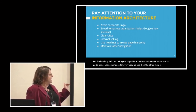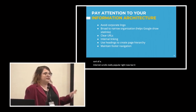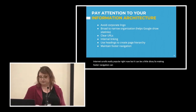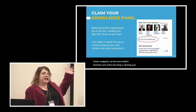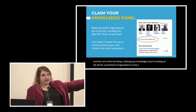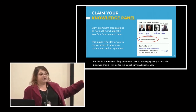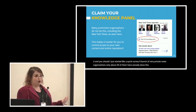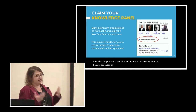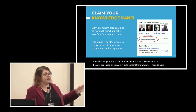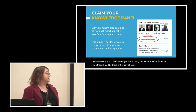Infinite scroll is popular right now but can be dicey — maintaining footer navigation is more helpful. Finally, claim your knowledge panel. If your organization is prominent enough to have one, you should claim it. A quick survey of prominent news organizations found only about 50% have done this. If you don't, the AI just pulls content from wherever and you have no control. If you claim it, you can submit information about what should appear, helping protect your content and online reputation.